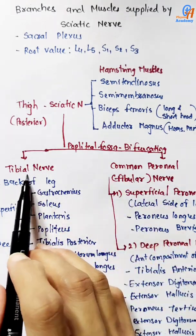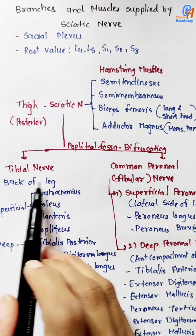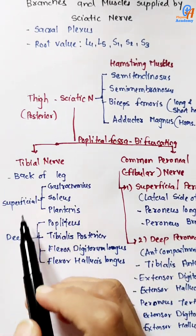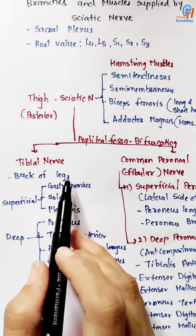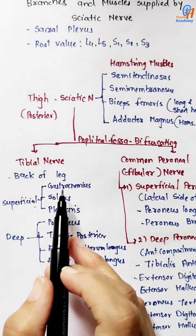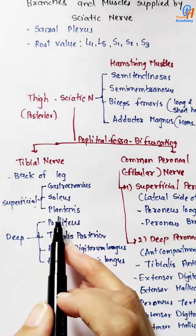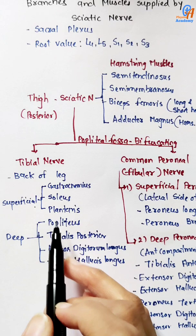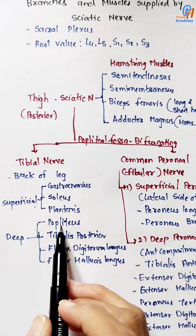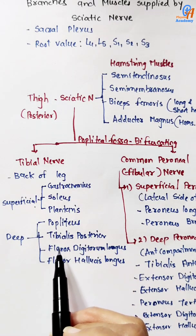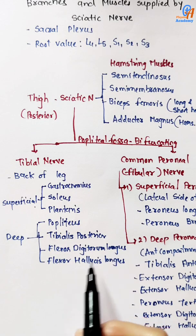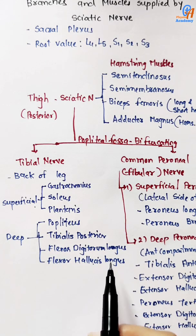The tibial nerve supplies the back of the leg — all the superficial and deep muscles of the back of the leg. In the superficial part, it supplies the gastrocnemius, soleus, and plantaris muscles. In the deep part, it supplies the popliteus, tibialis posterior, flexor digitorum longus, and flexor hallucis longus muscles.